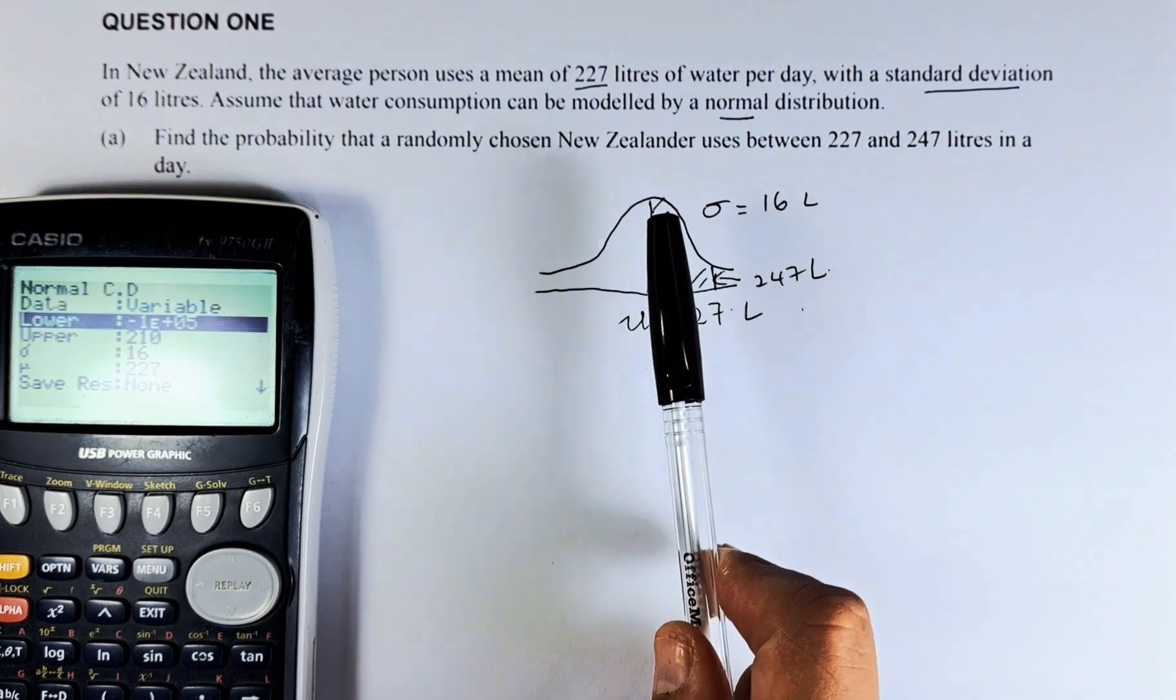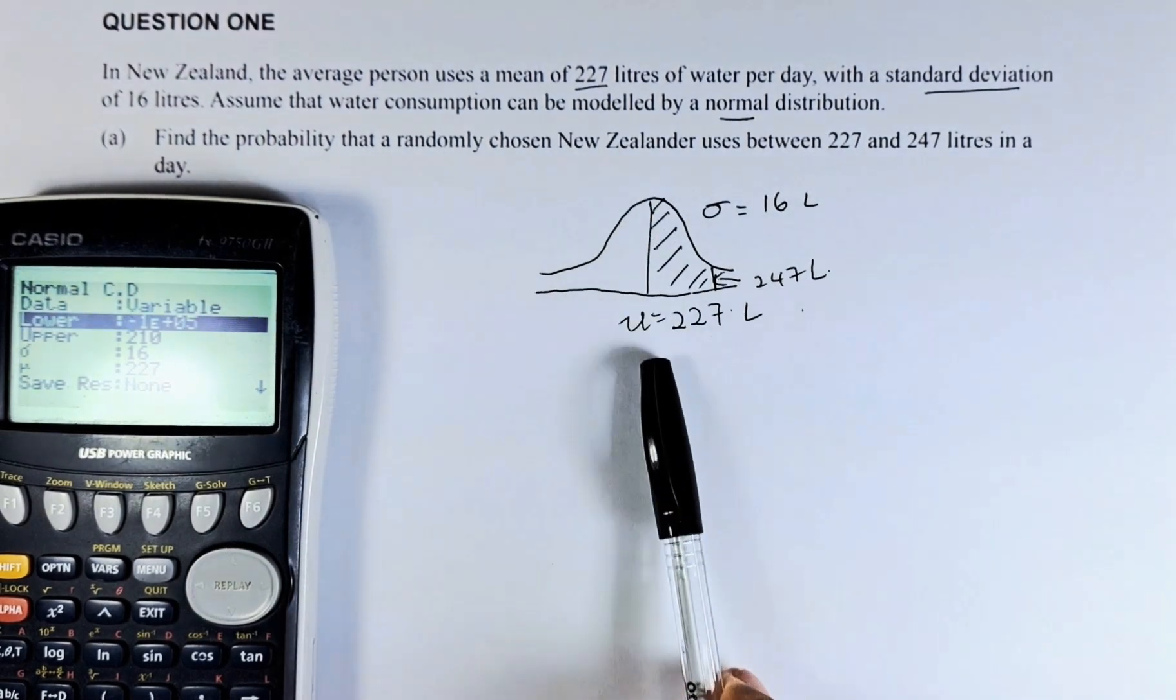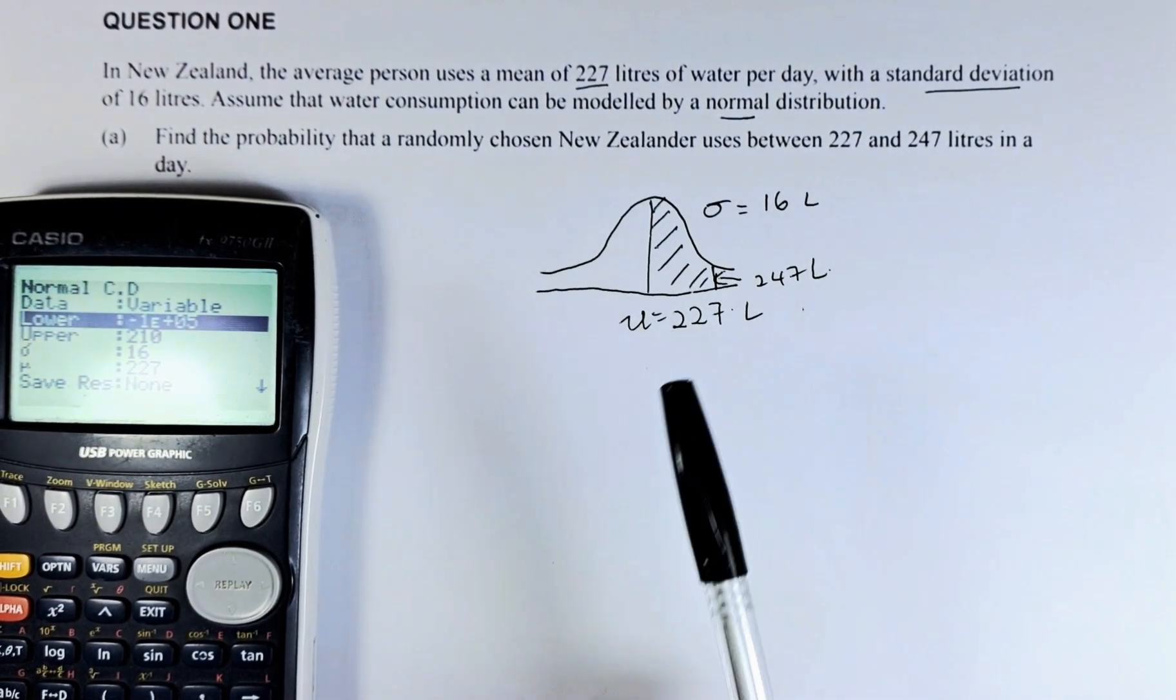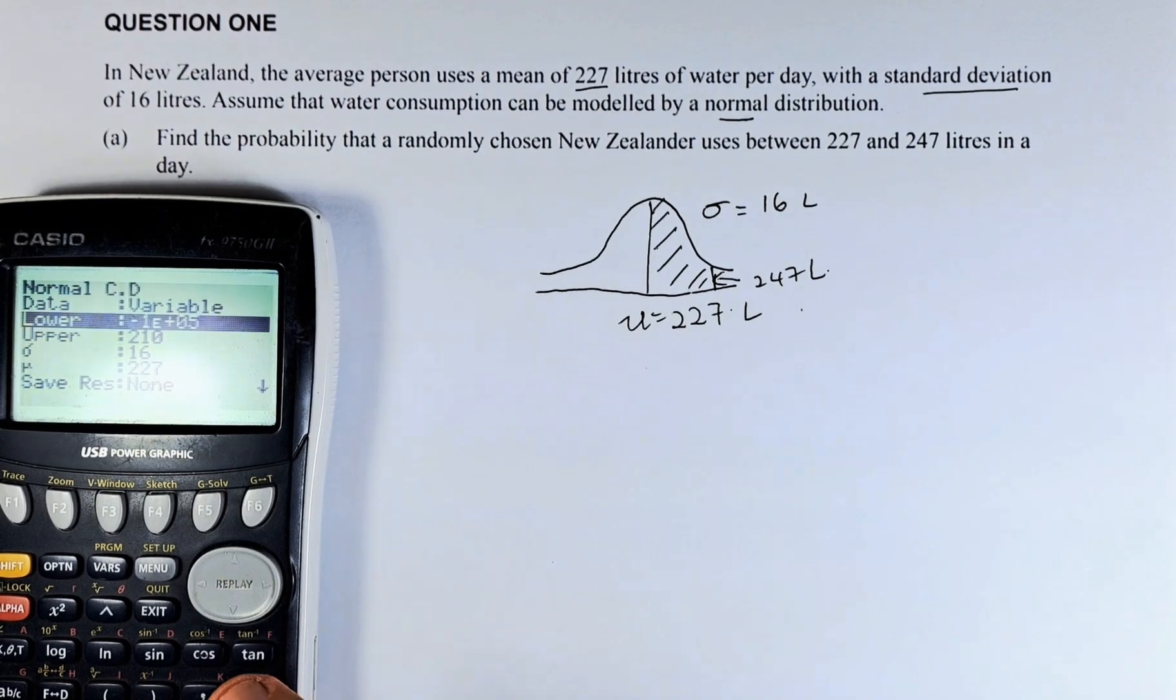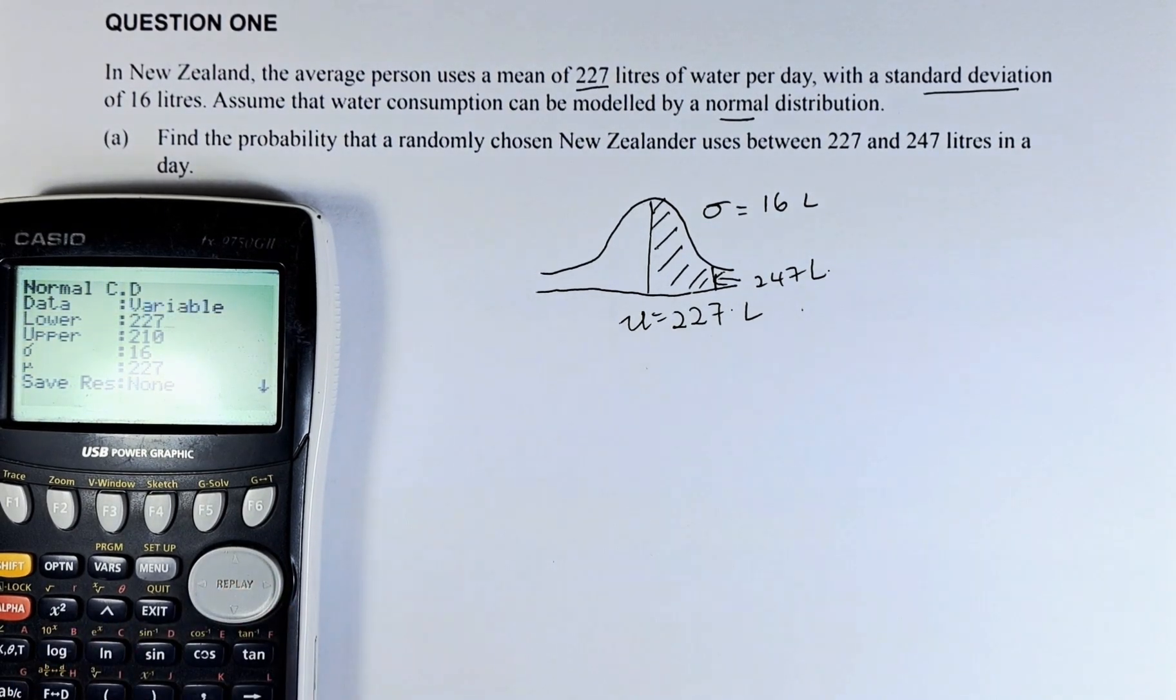Lower is the place where it's going to start, the area where it starts. So in our case, it's going to start at 227. So we are going to key in 227, and then execute.